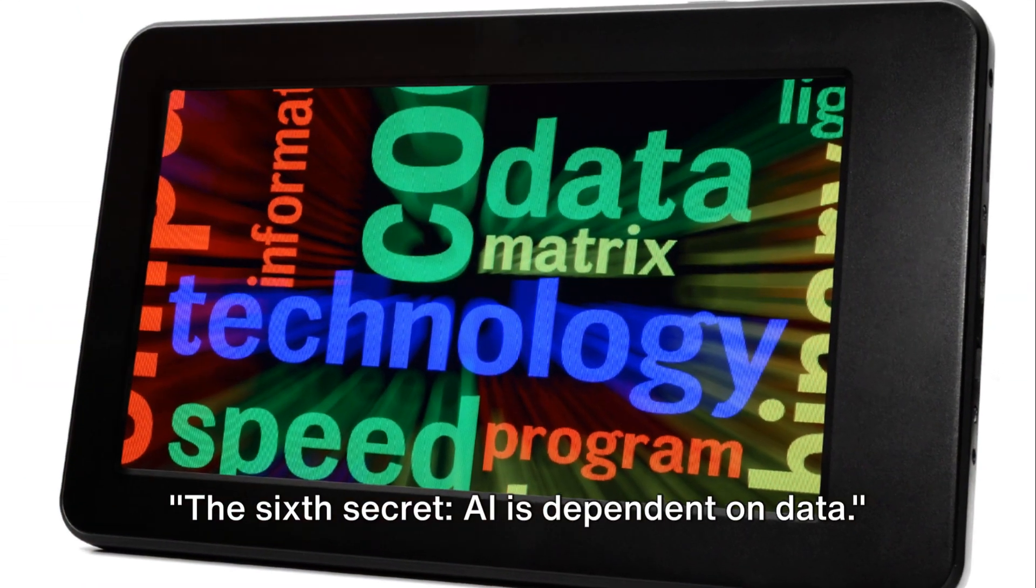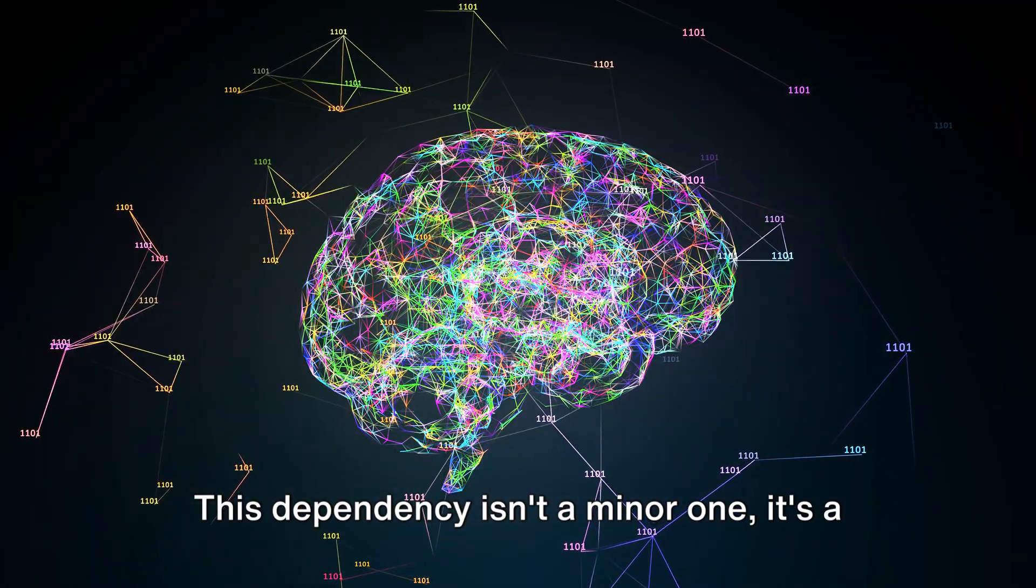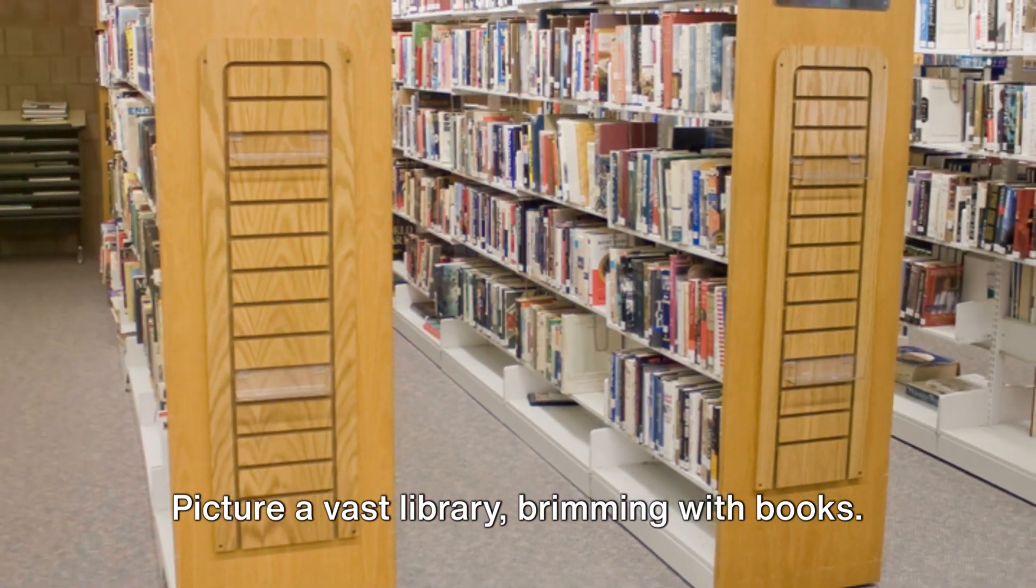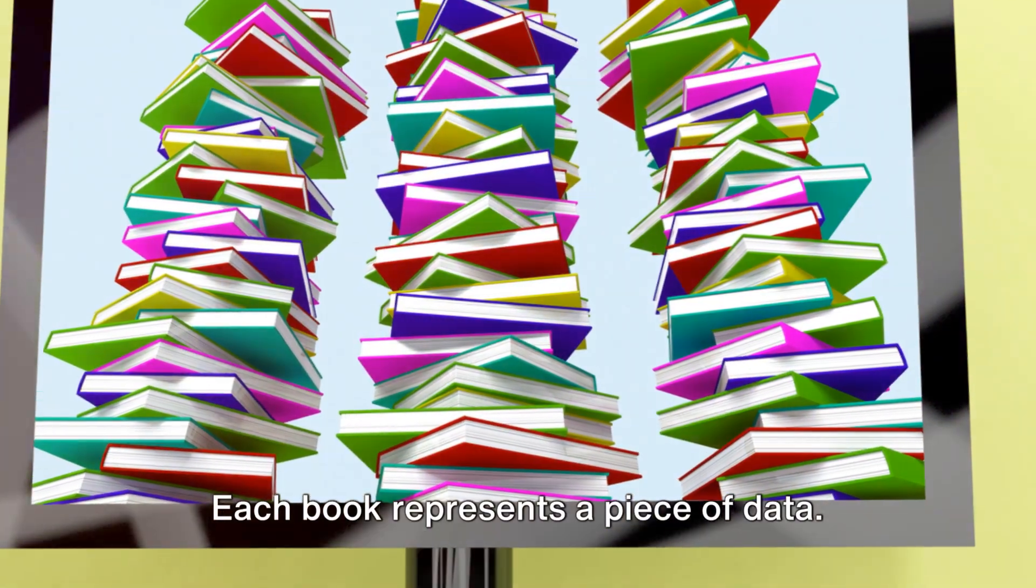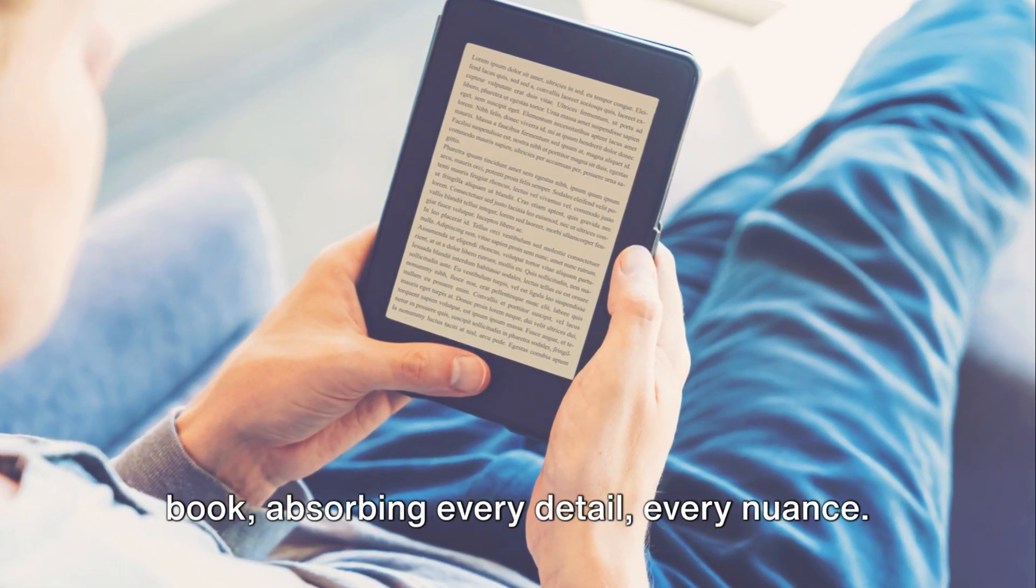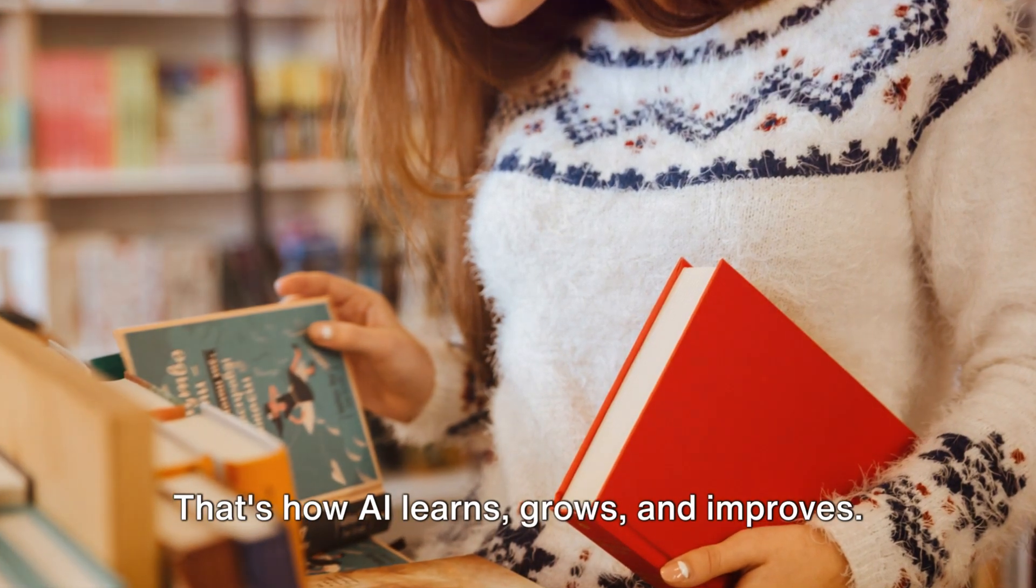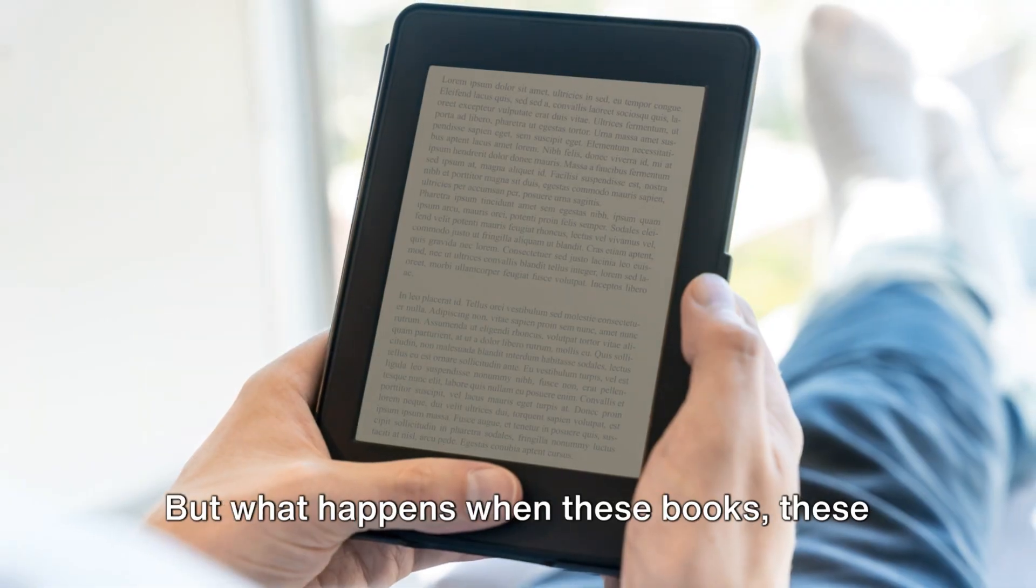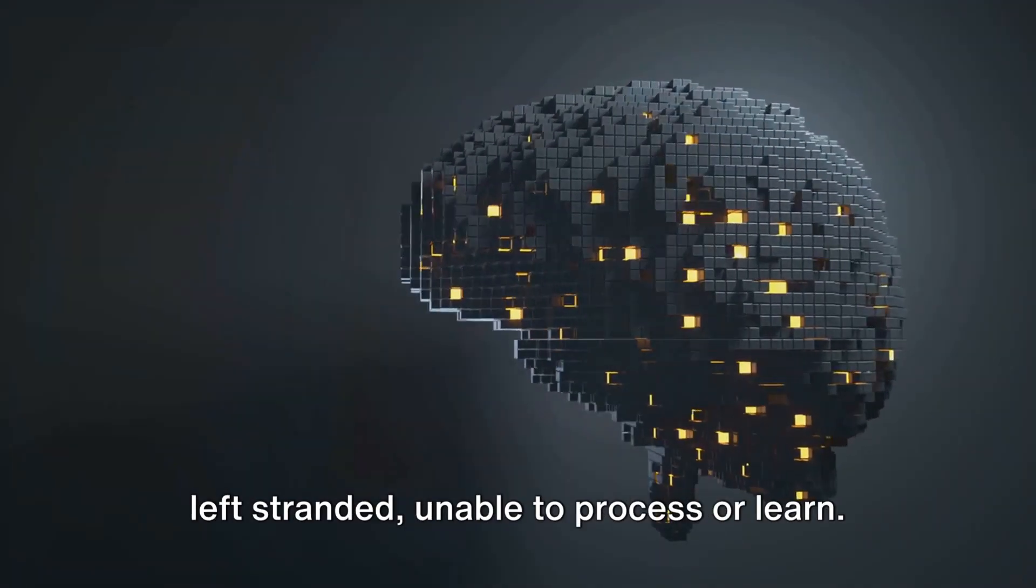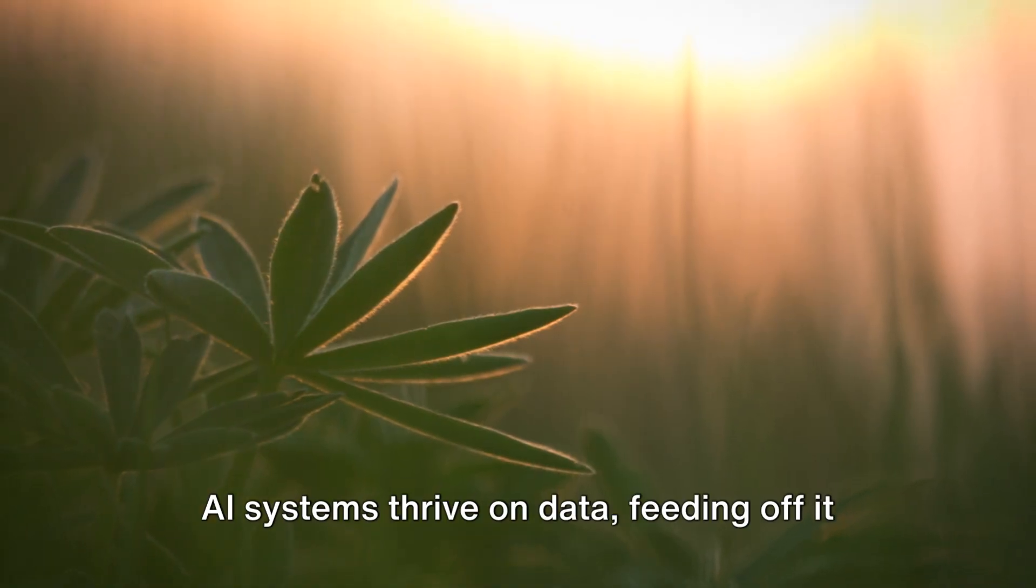The sixth secret, AI is dependent on data. This dependency isn't a minor one, it's a fundamental aspect of how AI operates. Picture a vast library brimming with books. Each book represents a piece of data. Now imagine an AI as a diligent librarian, tirelessly sifting through each book, absorbing every detail, every nuance. That's how AI learns, grows, and improves. But what happens when these books, these data points aren't available? The AI is left stranded, unable to process or learn.